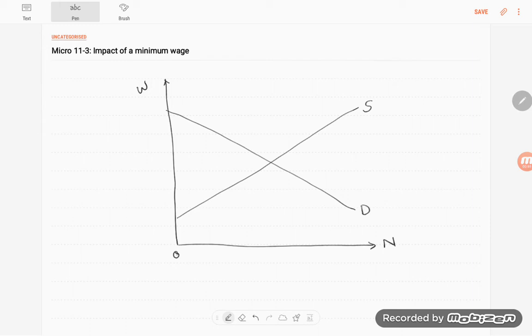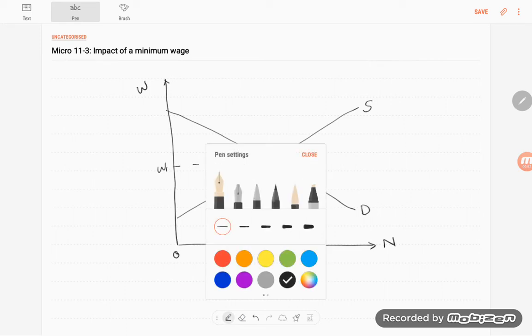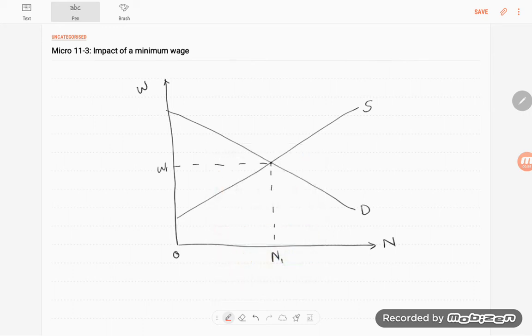Now, without intervention, the equilibrium number of workers would be N1 and the wage rate would be W1. Now, suppose the government decides that the wage is too low and it installs a minimum wage at W2.